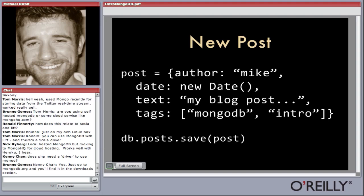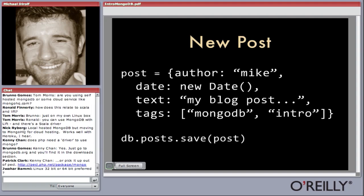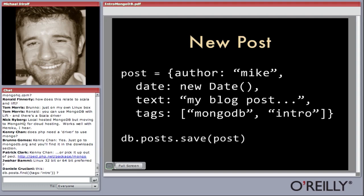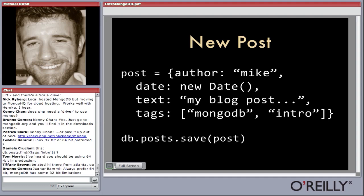Because we use BSON, we support some more complex types than standard JSON. For example, JSON has no date type, but BSON has added a date type — dates are important for a database. This is how you create a date in JavaScript, and it converts to the native date type in whatever programming language you're using. To actually insert that post, we just do db.post.save(post). That db.post is a collection — if a post collection doesn't already exist, it will be implicitly created in whatever database we're using, and it will save that post into that collection.